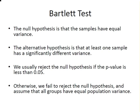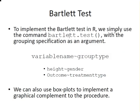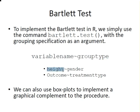To implement the Bartlett test in R, we simply use the command Bartlett.test with the grouping specification as an argument. Suppose we have a numeric variable called variable name and a categorical variable called group type. For example, height — a numeric variable — by gender, a categorical variable like male and female. Another example would be outcome, some sort of numeric score, and treatment type such as control group, experimental group, or intervention group. We can also use box plots to provide a graphical complement to these procedures, which is always very useful.